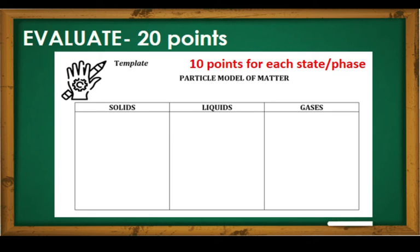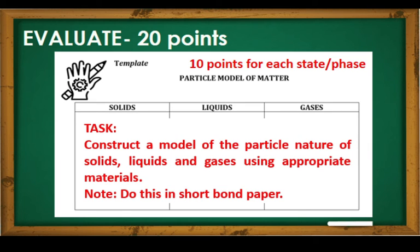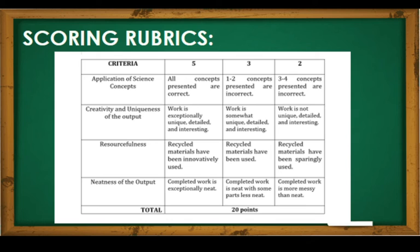And for your evaluation, you are given the task to construct a model of the particle nature of solids, liquids, and gases using appropriate materials. You have to do this in short bond paper to be attached in your learning activity sheet. This will be the scoring rubric that will be used in grading your model.